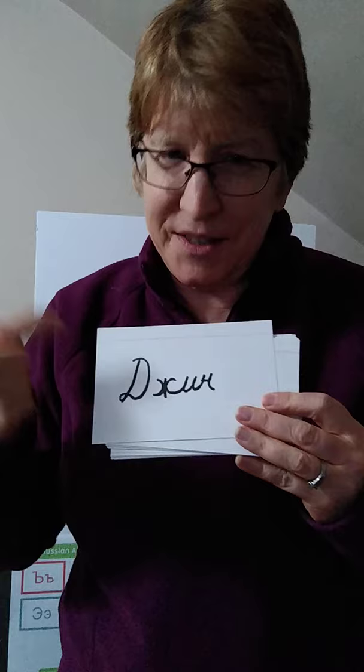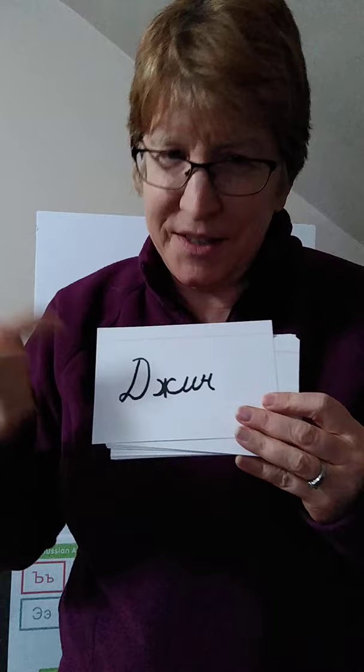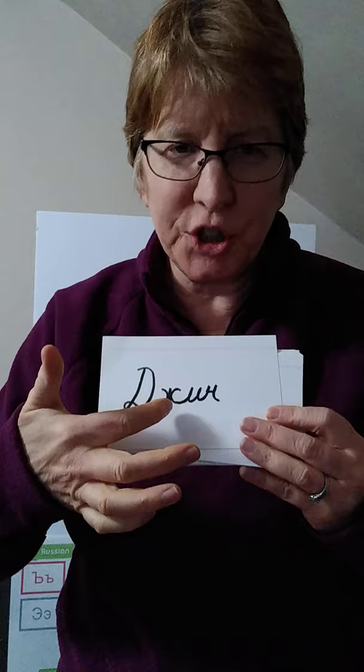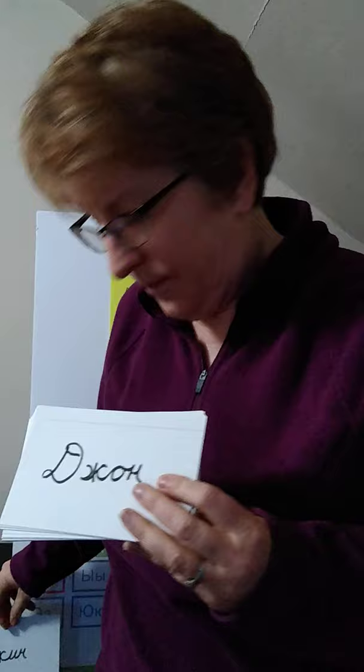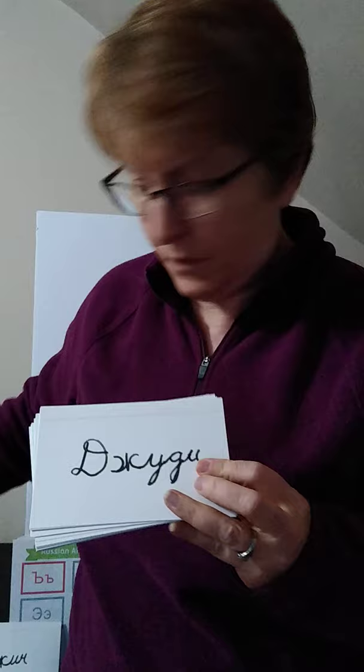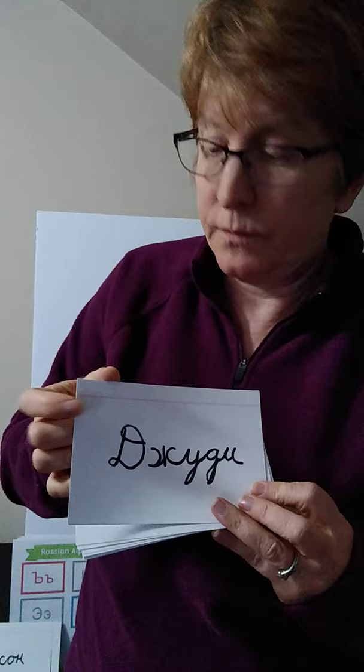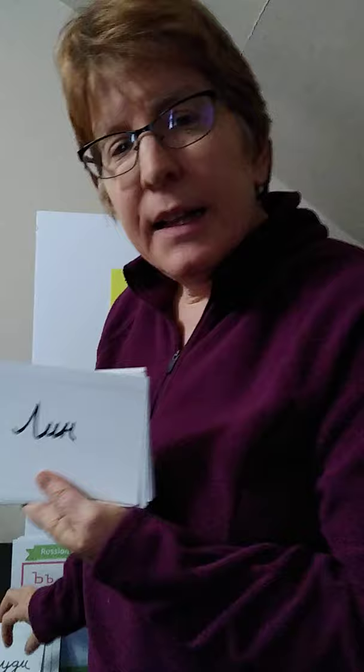So here are your names. Now what you have to know about Russian is there's no J sound. To make a J sound, they take a D and the ZH sound. This is G. And you might see this looks like a U but it's an I sound. This looks like an H but it's their N. Here are the names John, Judy, and Lin.